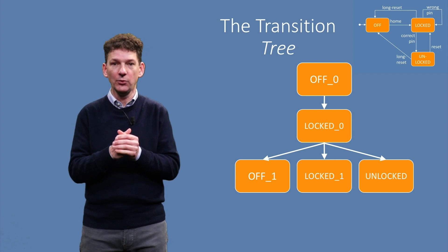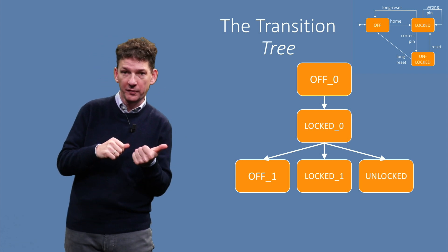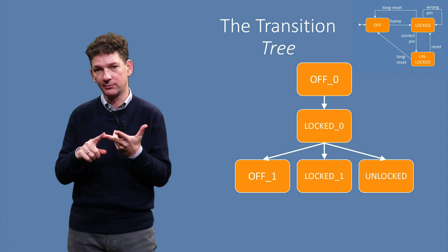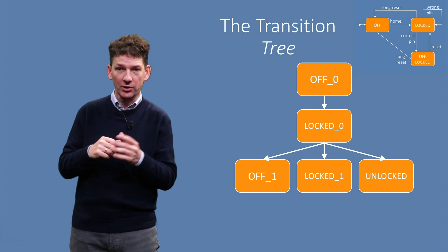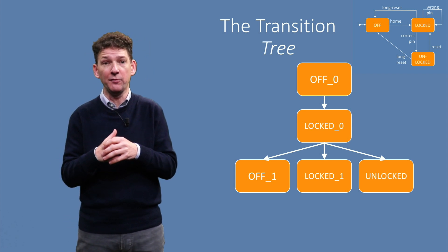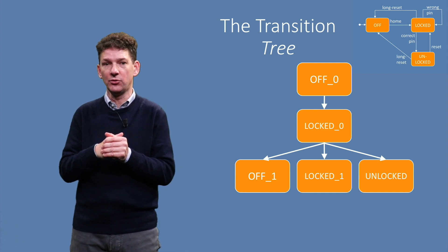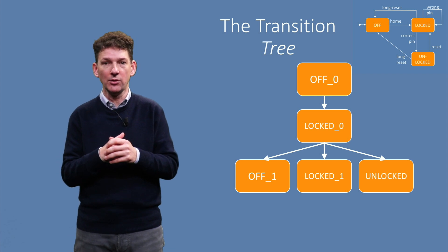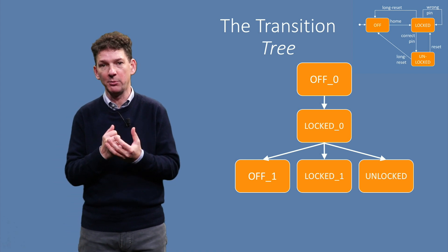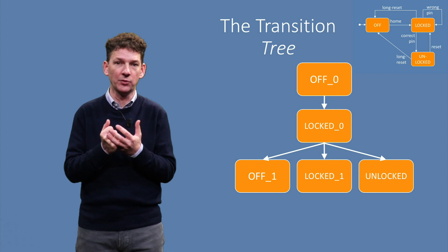From LOCKED we have three outgoing state edges, to OFF, LOCKED and UNLOCKED. Here the OFF and LOCKED states are somewhat special as we have seen them before. The OFF and LOCKED nodes in the tree. Since the 0 nodes in the tree already describe their behavior, we do not repeat it for the 1 nodes.